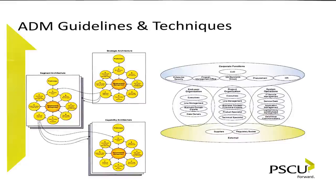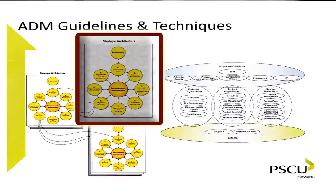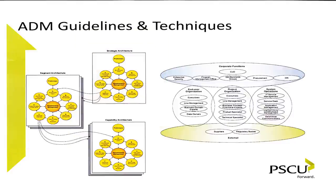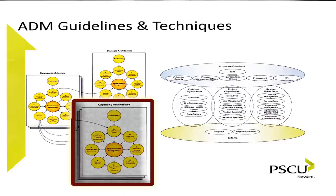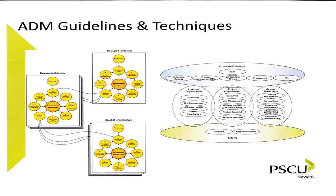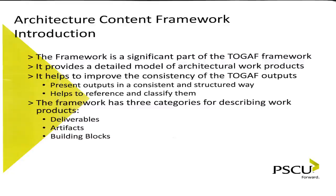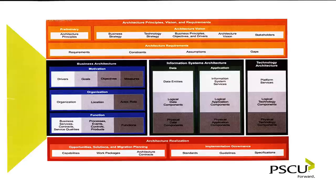Here's another flow of the ADM guidelines and techniques. There's a strategic architecture with an ADM flow that feeds into segment architectures, which flow into capabilities. TOGAF can be applied at any given level of PSU's organization, and I would argue you should be running some level of TOGAF on your projects to gather proper documentation into the requirements management area. The architecture content framework is a significant part of TOGAF where we store many of the architecture artifacts — the deliverables, artifacts, and building blocks. It includes data entities, logical components, broken out into data and application technology platform.